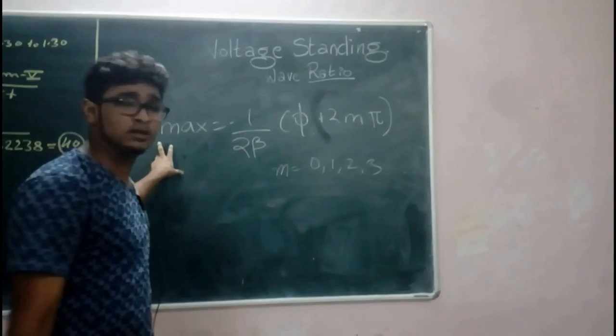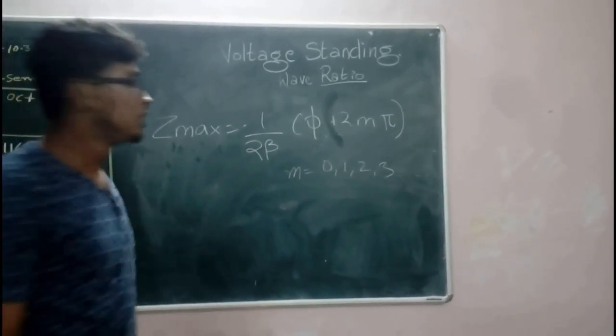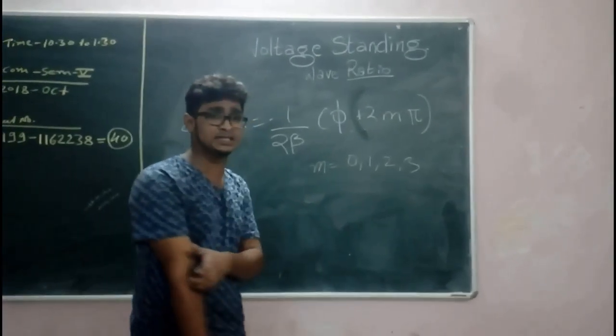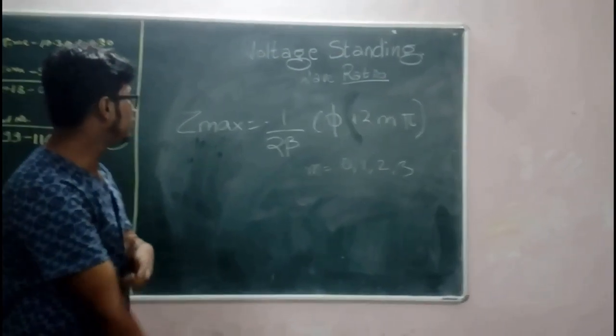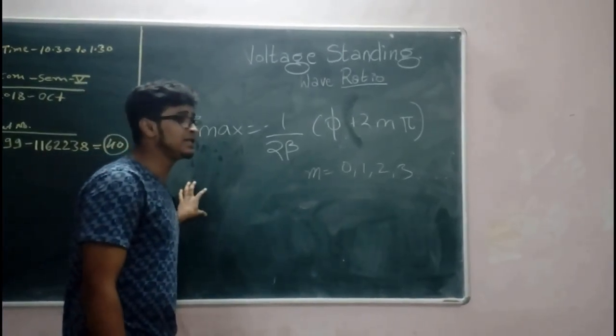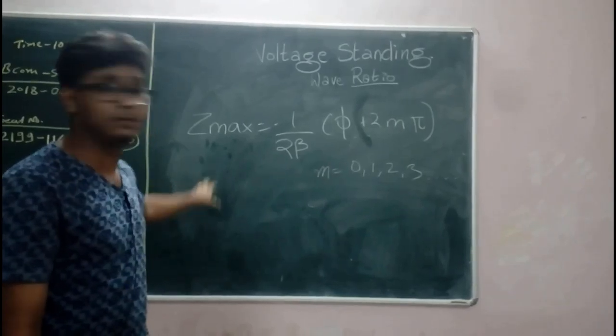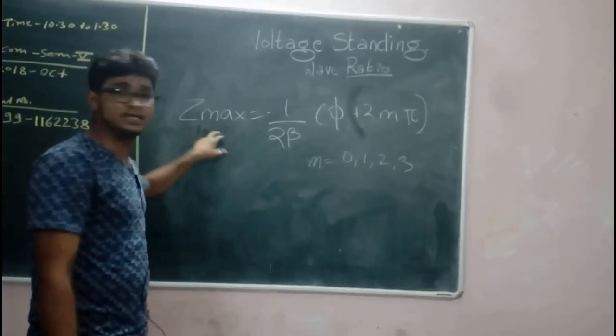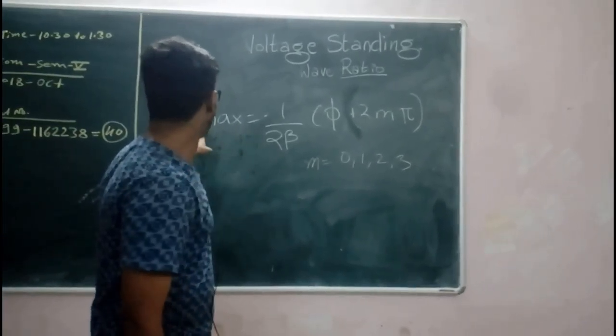As we found the Z minimum at the length at which impedance is maximum, we can similarly find the length at which impedance is minimum, that is Z is maximum.